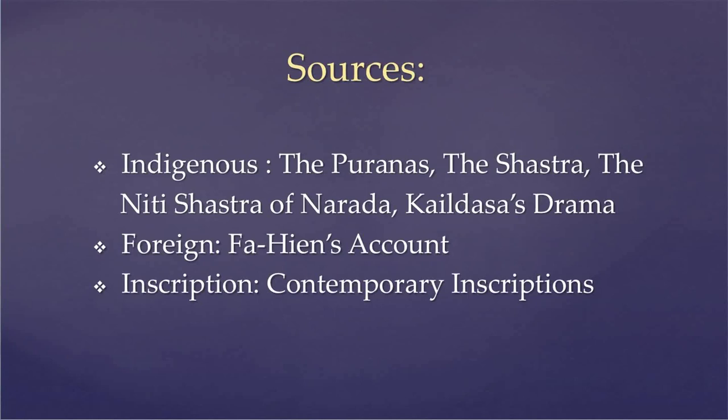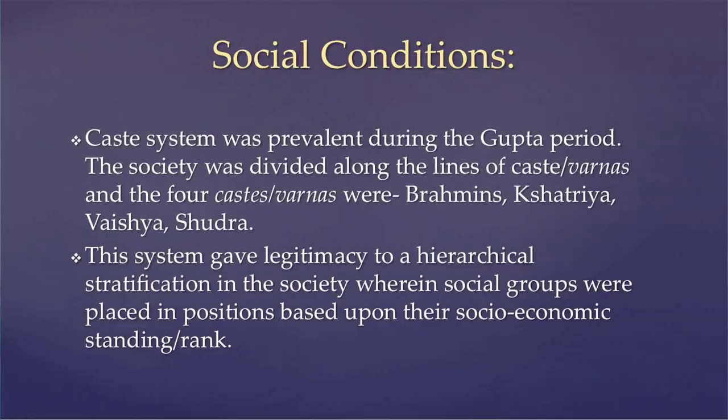Let us begin with the social conditions, or what kind of society prevailed during the Gupta rule. From all the sources — literary, epigraphic, inscriptions, and coins — we see that society was divided along the lines of caste or Varnas. The four castes or Varnas were the Brahmins, the Kshatriyas, the Vaishyas, and the Shudras.